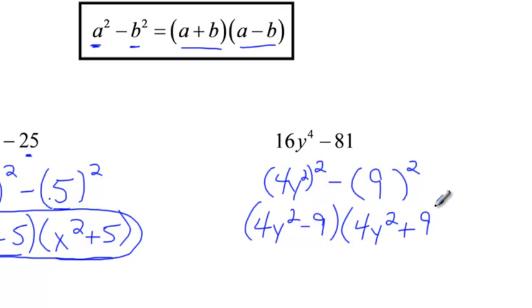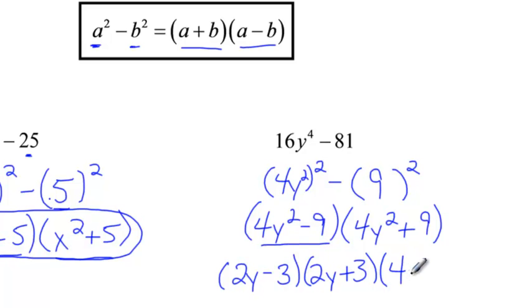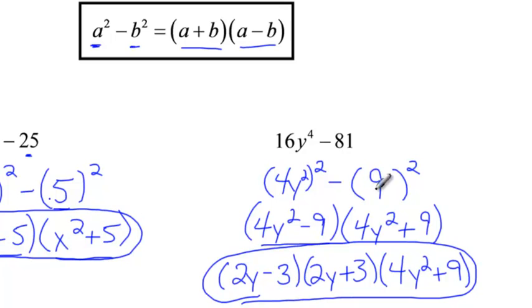Now, this one will allow us to do difference of squares again, because 4y squared and 9 are perfect squares. So I can split this up and say 2y minus 3, 2y plus 3, and this 4y squared plus 9, sum of squares, we don't have that. So we're just going to leave it as 4y squared plus 9. And that's our final answer. Once we get down to that linear term, we're good to go.